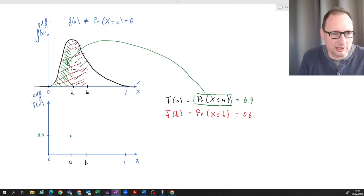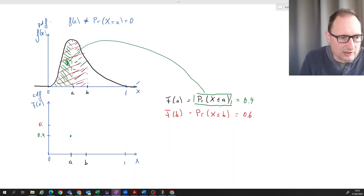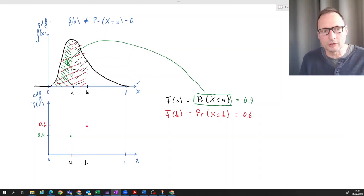Remember, the area under the entire PDF is one. Well, if that was 0.6, that means at B here, we are at 0.6. So the CDF would go through these two points.